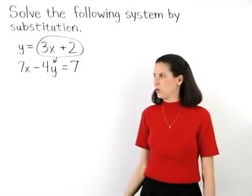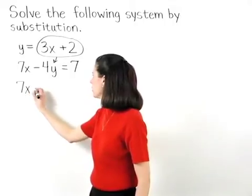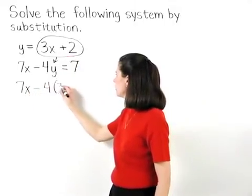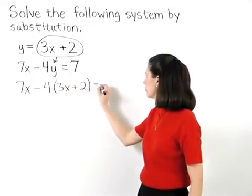And rewriting our second equation, we now have 7x minus 4 times parentheses 3x plus 2 equals 7.